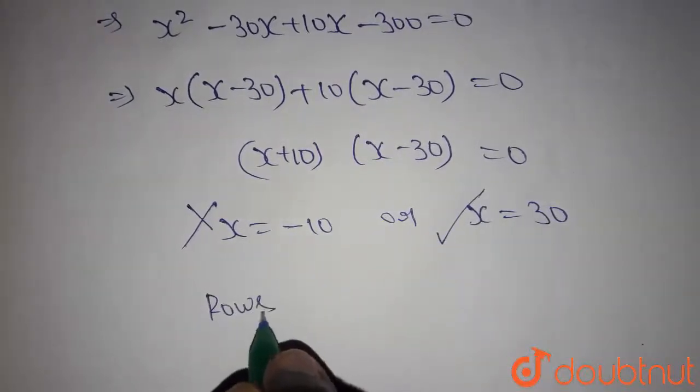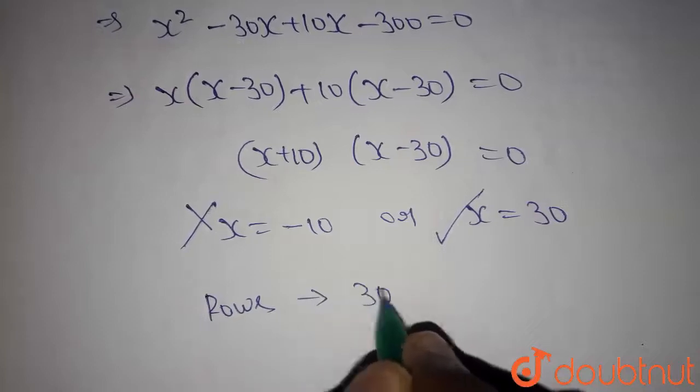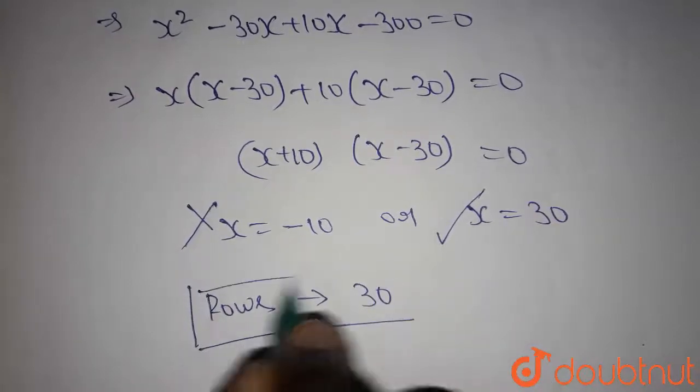So number of rows in original arrangement is 30. Thank you for watching the video. I hope you found this video helpful.